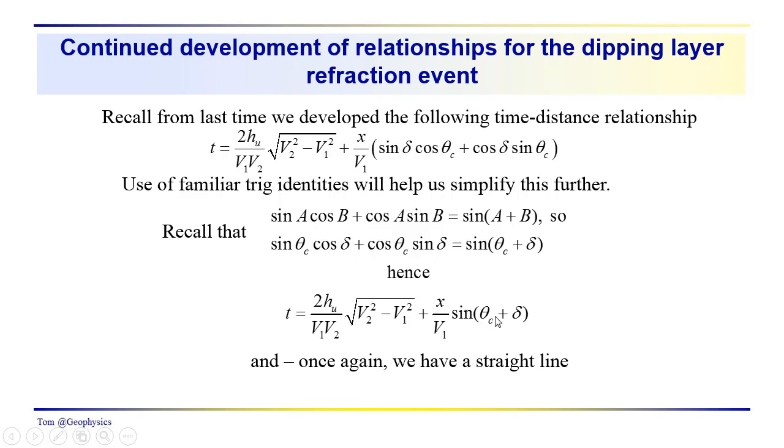The slope of the straight line is sine theta critical plus delta over V1. We don't see a V2 in there, do we? We need to have V2. If we had V2, we could figure out what the critical angle is. How do we figure out the dip? How do we figure out HU? Those are some of the problems that we're going to have to address.